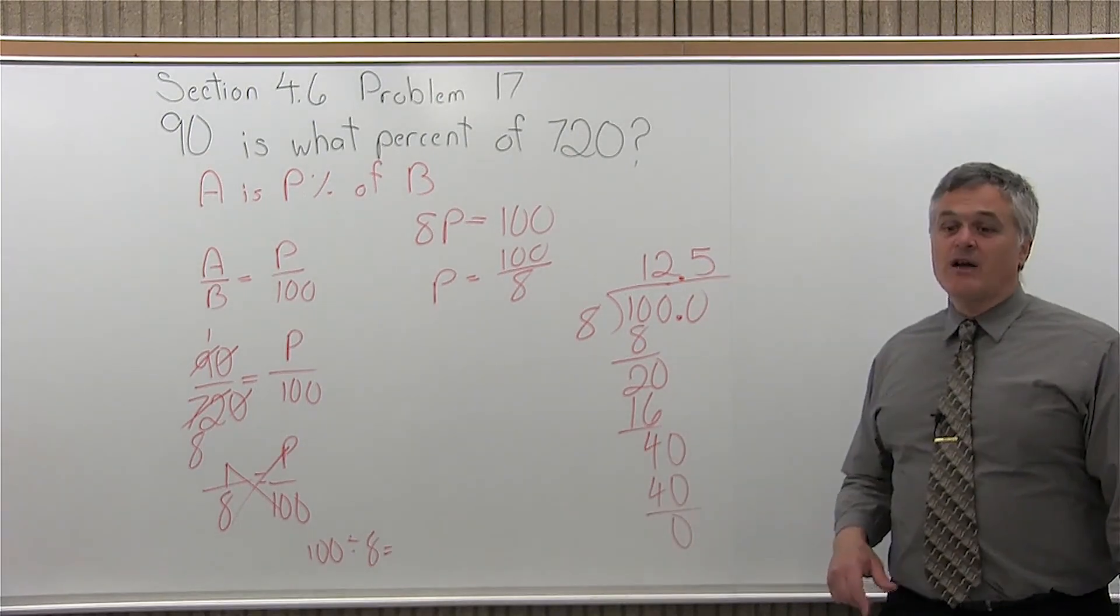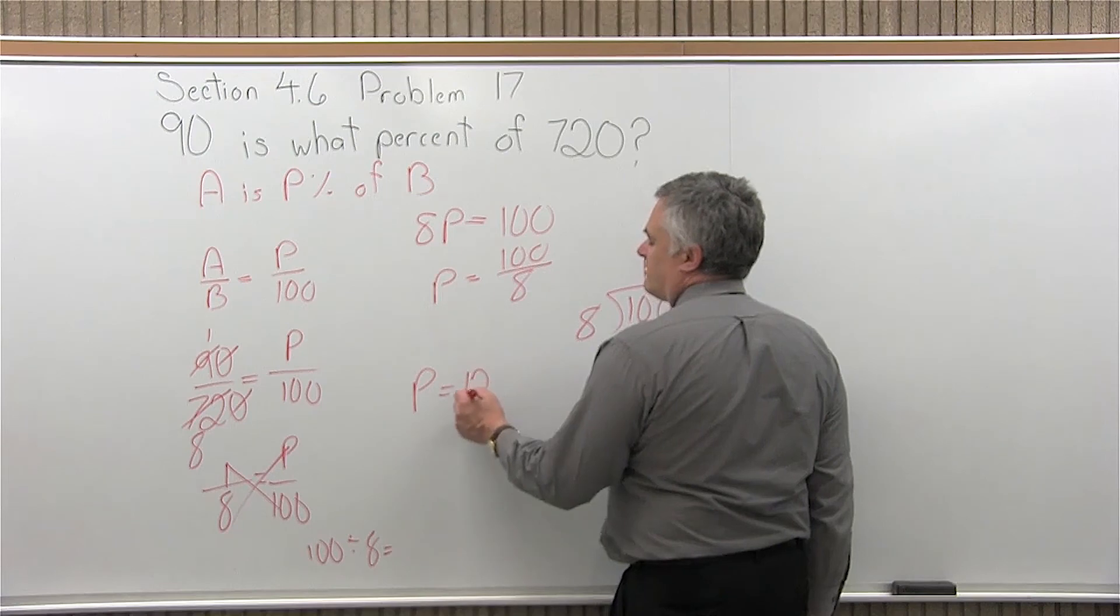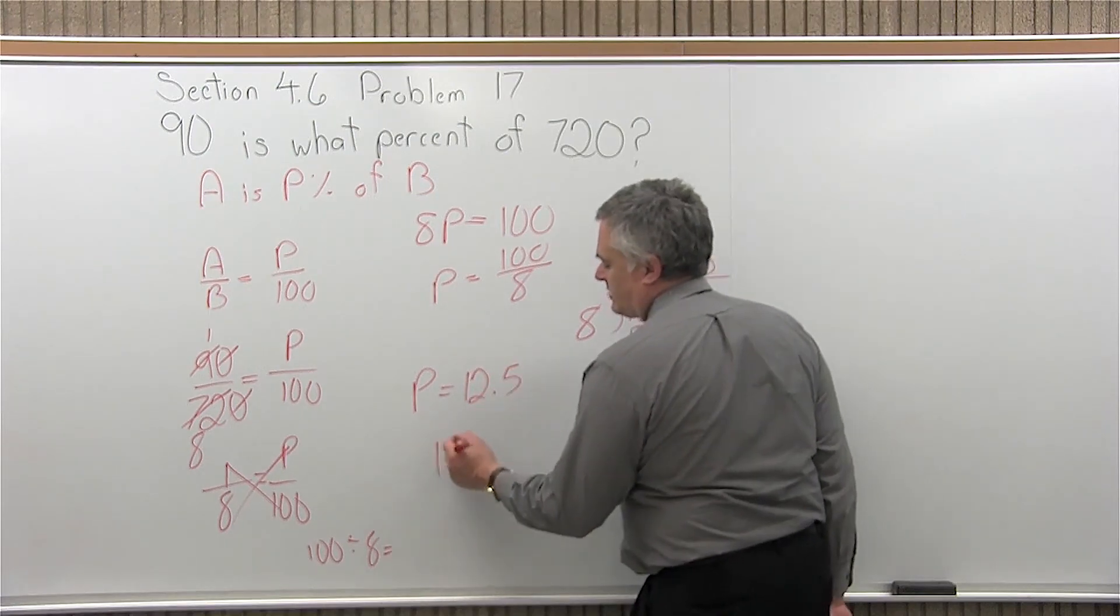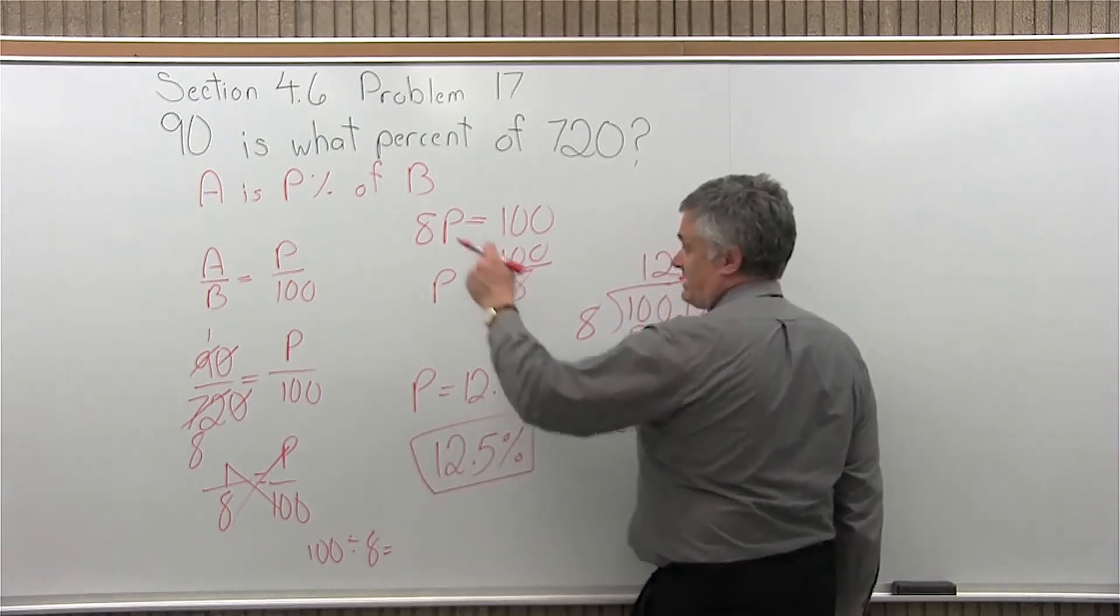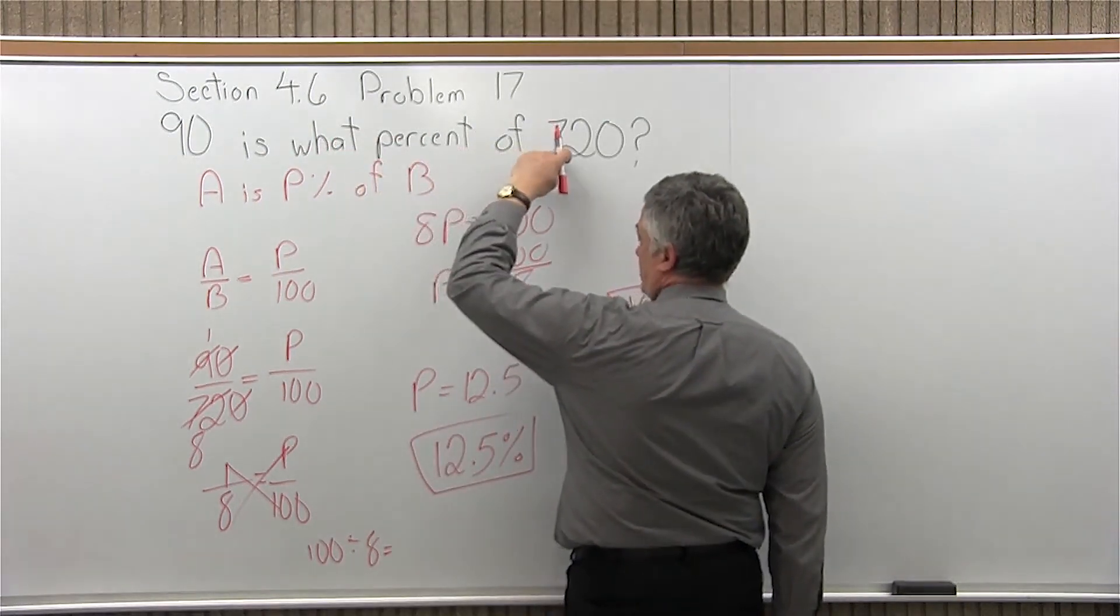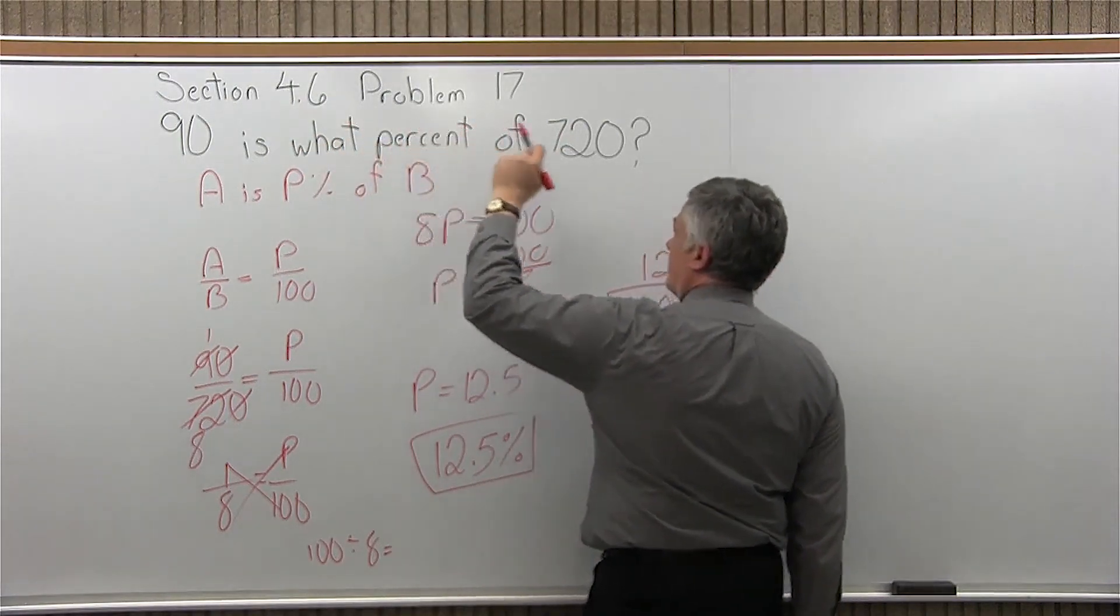So, the answer is 12.5. Or you could call it 12 and a half. So, P is 12.5. Now, that's a percent. So, if you really want to do a nice job, you can make it 12.5 and put the percent symbol after it. And that answers the question. 90 is what percent of 720. 90 is 12.5 percent of 720.